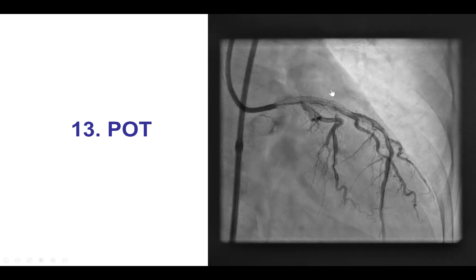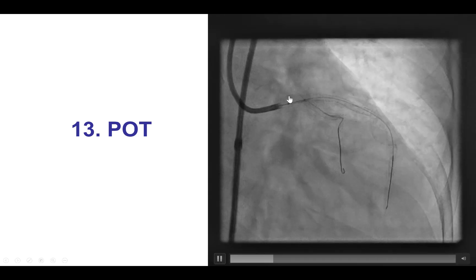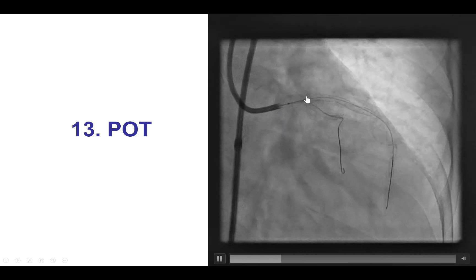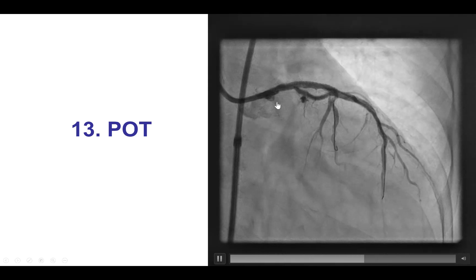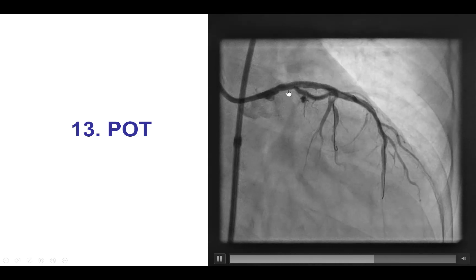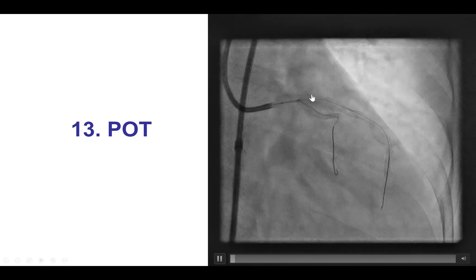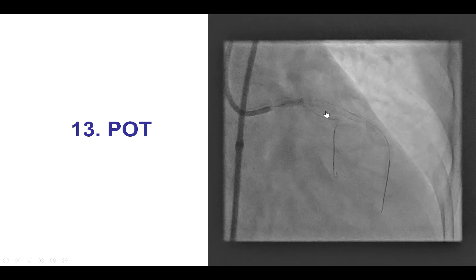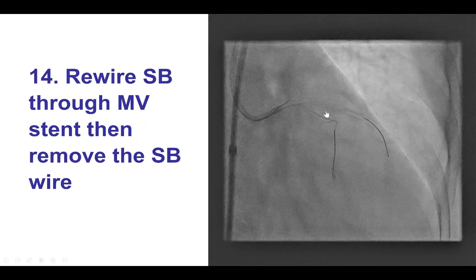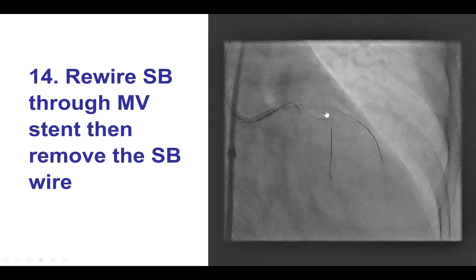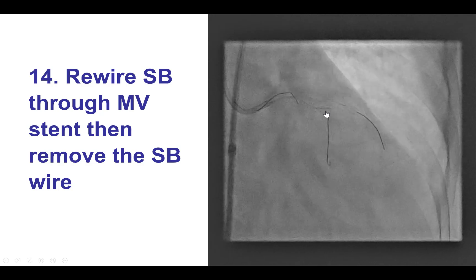The next step is to perform the proximal optimization technique (POT). This is critical to facilitate rewiring into the side branch — otherwise the wire might go under the stent struts of the main vessel stent and deform the stent when balloons are inflated. The balloon was inflated — that was a 4.0 mm balloon — and then the side branch was rewired.